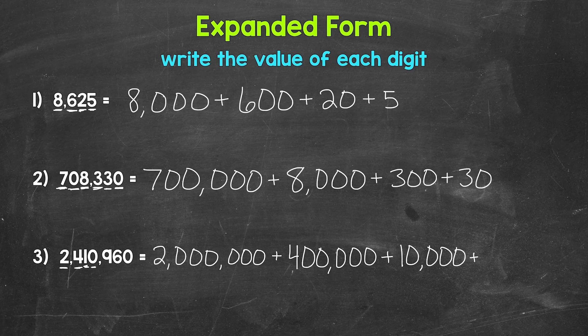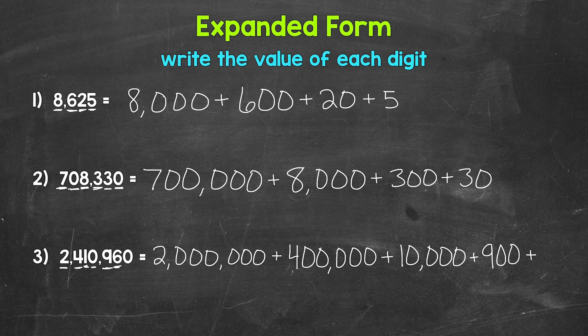The next digit is a 0 in the thousands place, so we don't have any thousands for this number — we don't have anything to write for the thousands place. So we can move to the next digit, which is a 9 in the hundreds place. So this 9 has a value of 900. Moving to the next digit, we have a 6 in the tens place. This 6 has a value of 60. And then we have a 0 in the ones place, so we don't have anything to write for the ones place. So there's how to write numbers in expanded form.